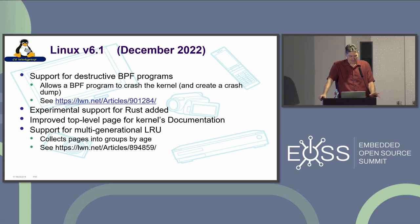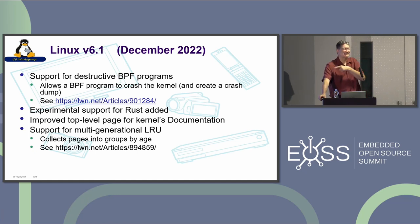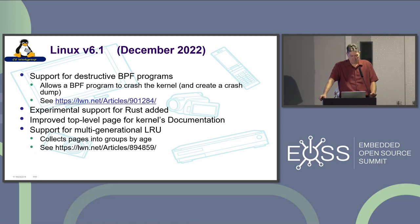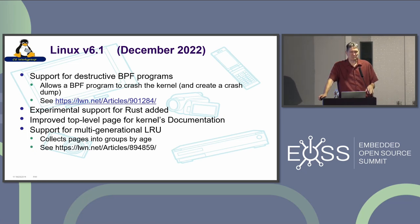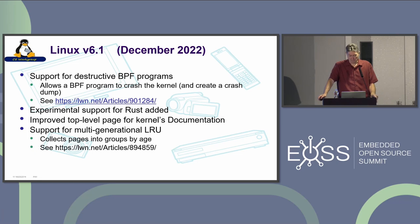Another big piece of news in this kernel in December was experimental support for Rust. There's improved huge page support and the kernel documentation just kind of continues to improve, which is really good. And there's support for multi-generational LRU — after all these years, they're still coming up with new scheduler algorithms and page replacement algorithms. This is a new system that groups pages differently into generations and improves performance under some workloads.